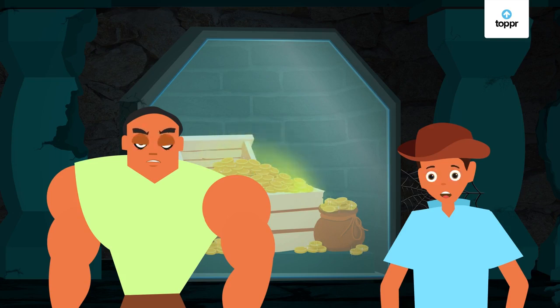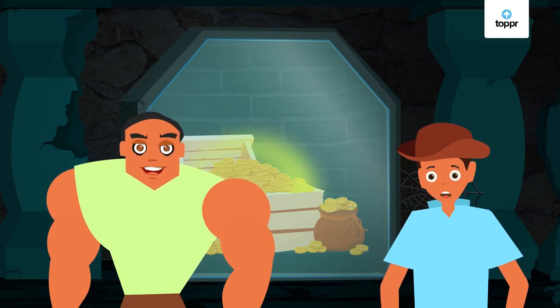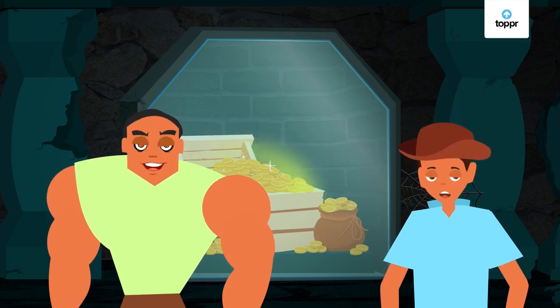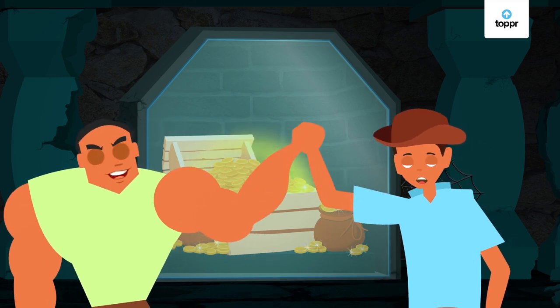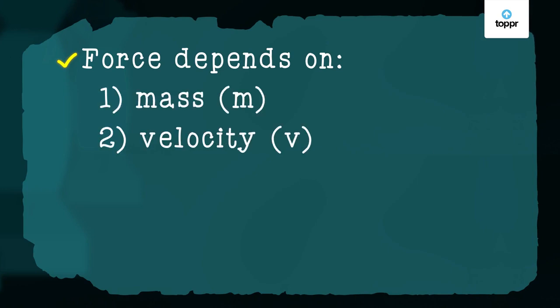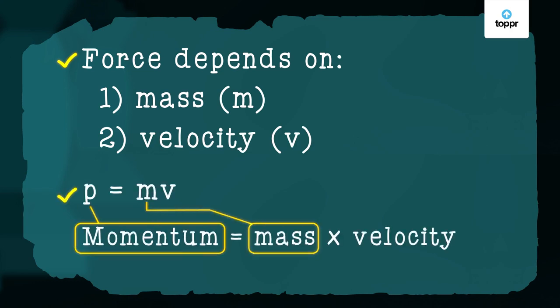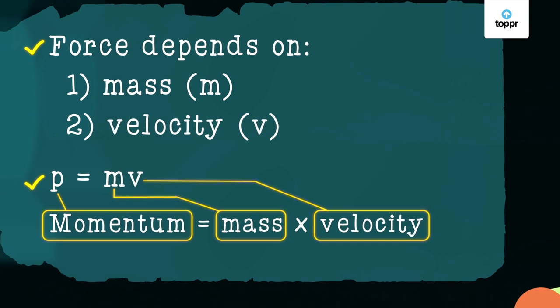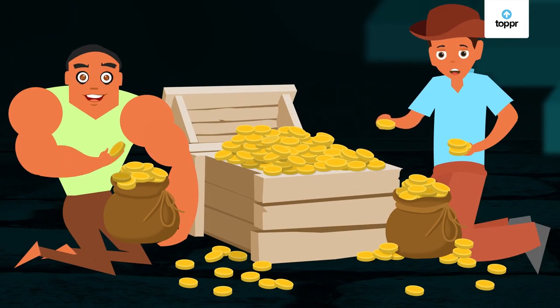Now that both you and your rival understand what momentum is and how it works, how about you both break the glass together and split the treasure equally — so everything's fair. Force applied by an object depends on: one, the mass, and two, the velocity. p is equal to mv. Momentum equals mass into velocity. But you're probably happier because now you're rich and maybe your rival will become your partner.